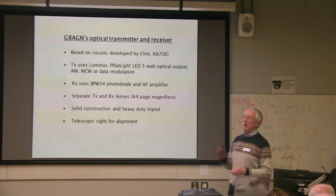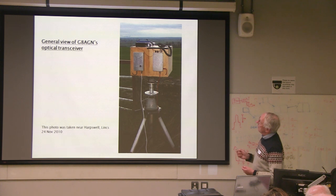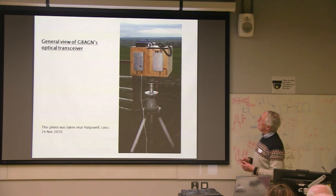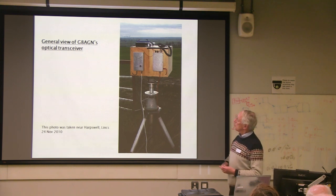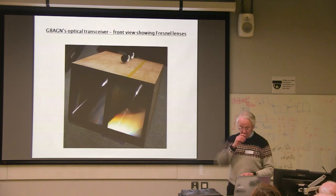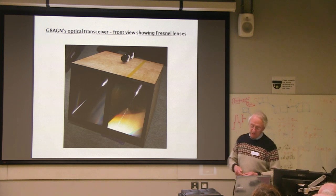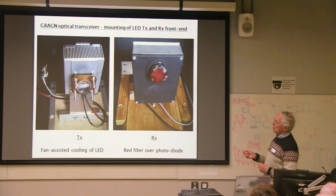A telescopic sight with crosshairs is quite useful, especially when looking for somebody from the other end when things aren't as bright as that first picture. Looking at the gear: the receiver back end, the transmitter back end — that's the modulator. The telescopic sight is on top, a Morse key on the top. Because where I live is high up and windy, the front of the system has two Fresnel lenses.